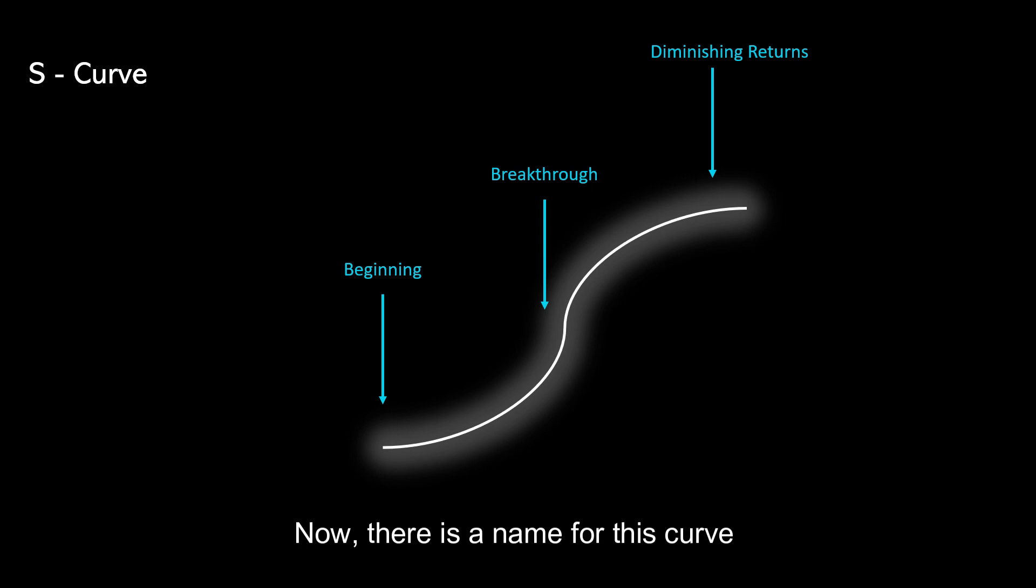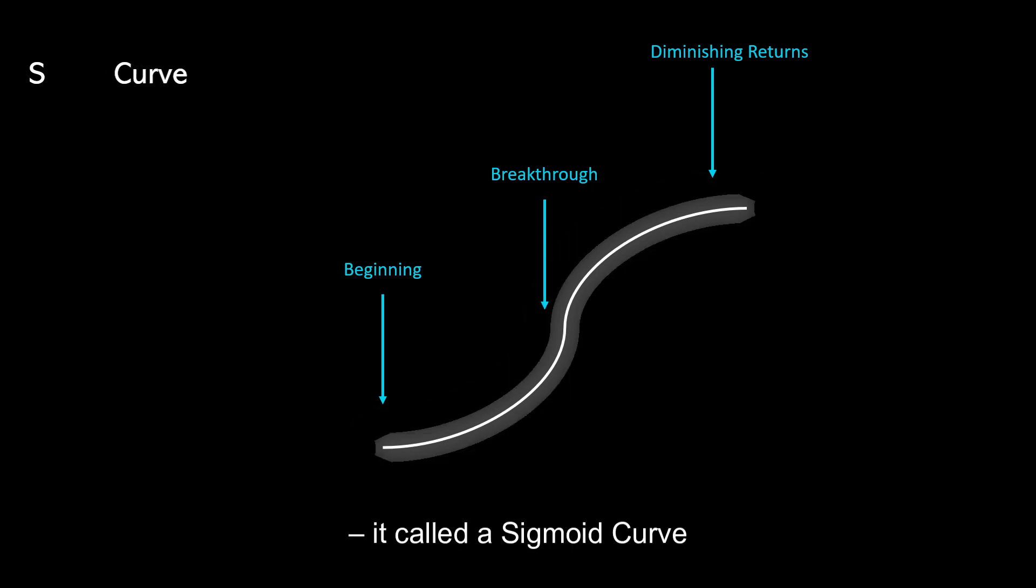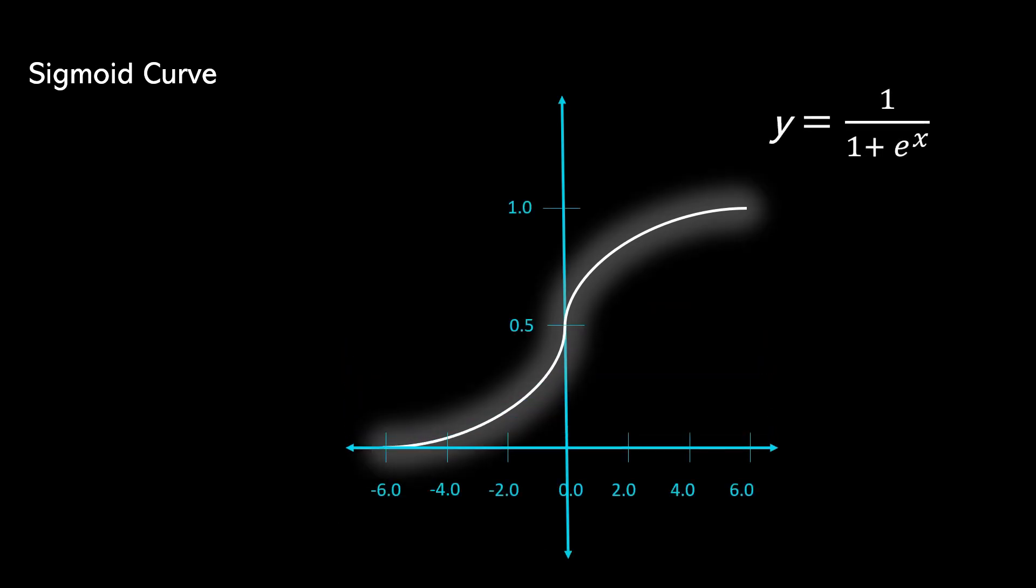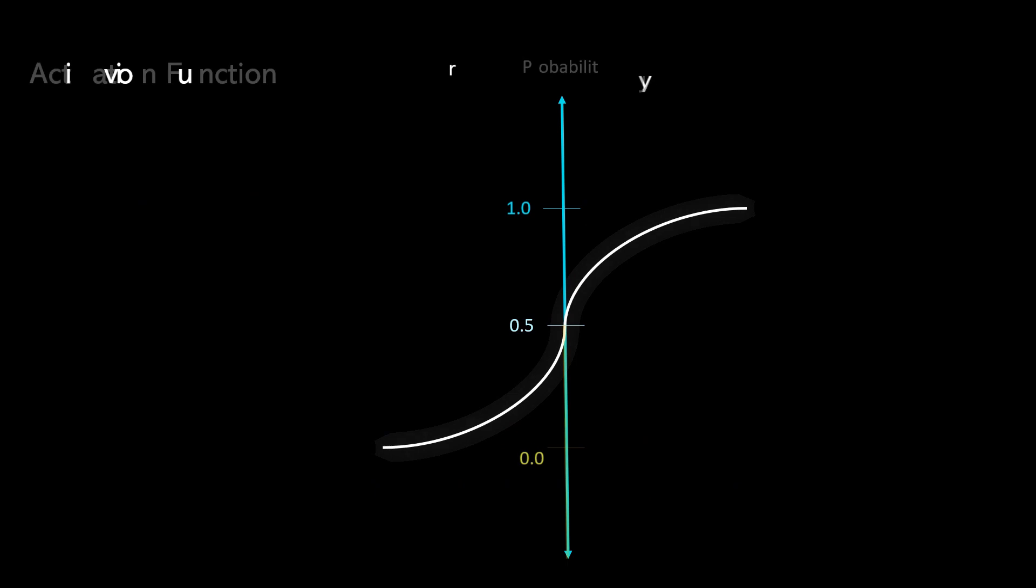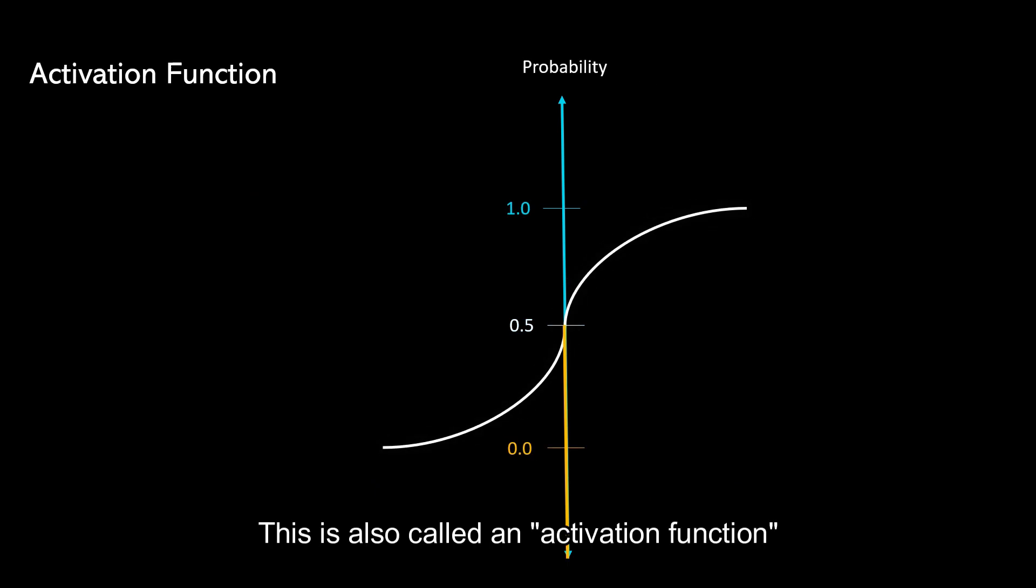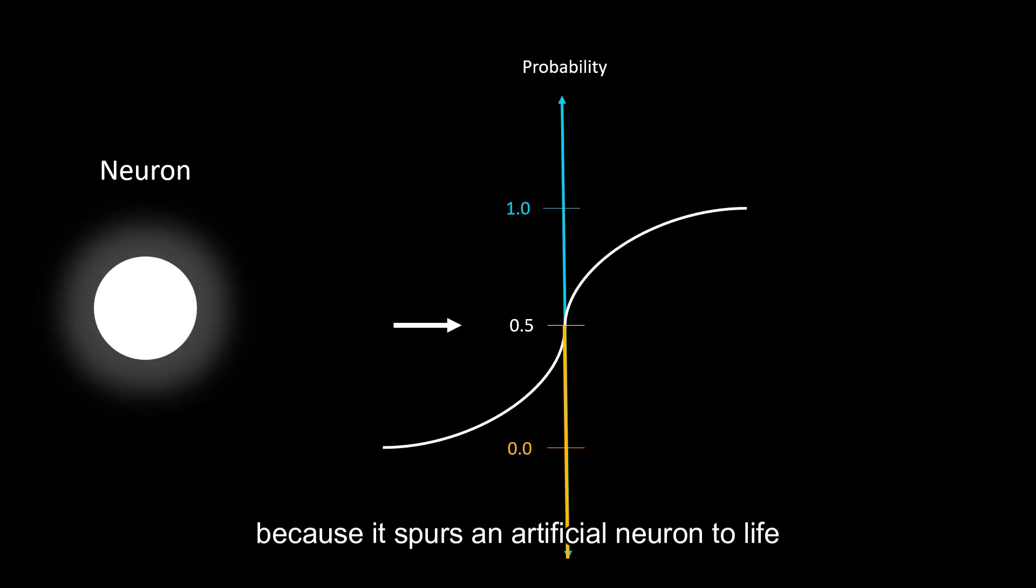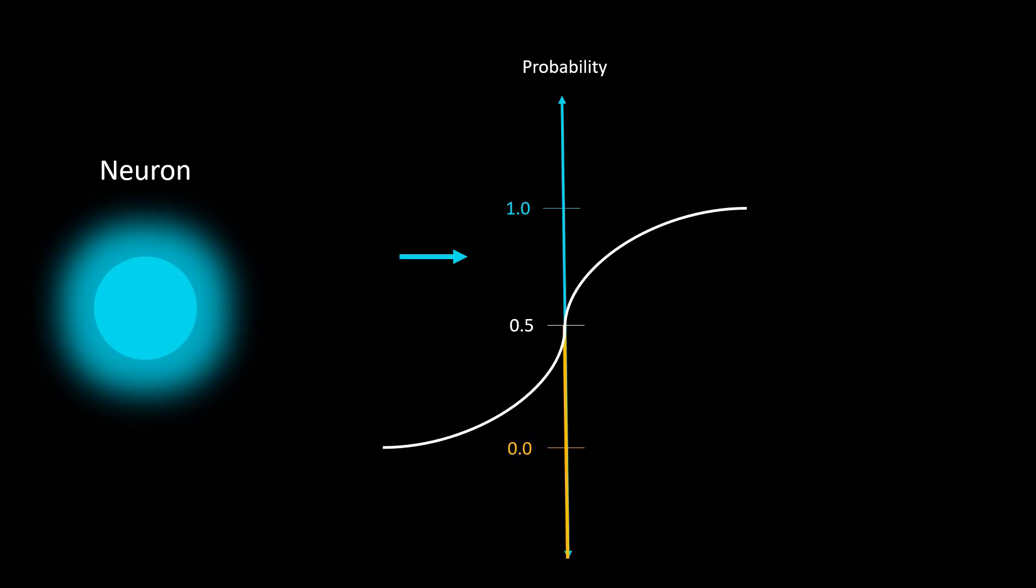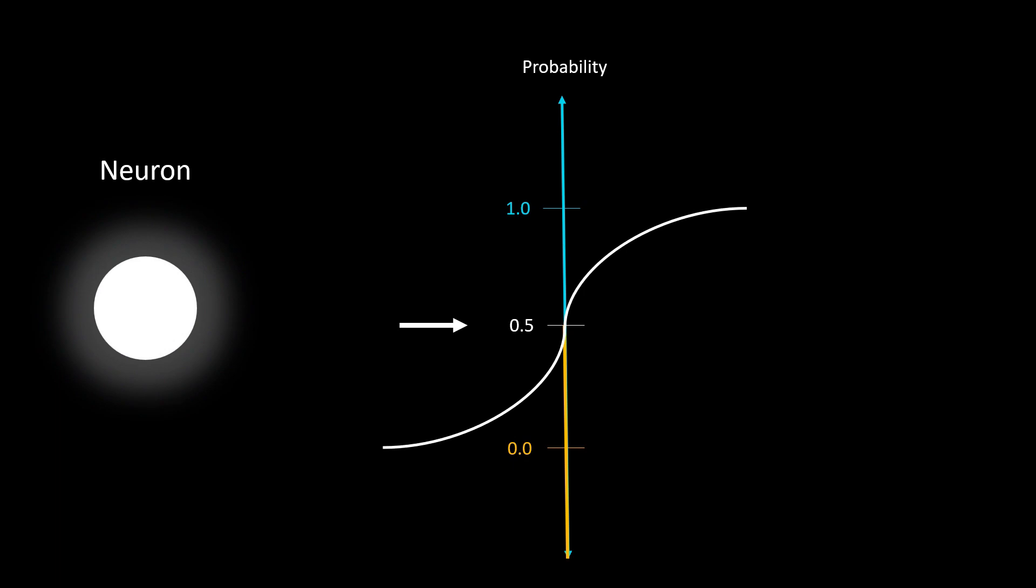Now, there is a name for this curve. It is called a sigmoid curve. And the good news is that it comes with a math equation that is almost magical. Any number you throw at this equation gets squashed to a scale of 0 and 1. This is also called an activation function because it spurs an artificial neuron to life, akin to a biological neuron. It determines the neuron's destiny based on whether the threshold is surpassed or not.